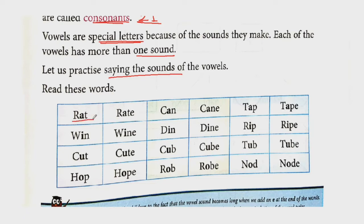Read these words. Rat, R-A-T. Rate, R-A-T-E. Can, C-A-N. In these words which vowel is common? A. But their sound is all different. Cane. Then Tap, T-A-P. And Tape, T-A-P-E. Look, let's revise their sound again: Rat, Rate, Can, Cane, Tap, Tape. Each one's sound is different.